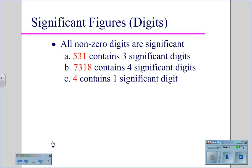All non-zero digits are significant. So in 531, all three numbers are non-zeros, therefore you have three significant digits. 7,318 will contain four significant digits, and the number four is one significant digit.